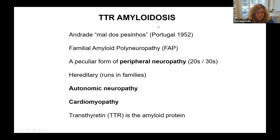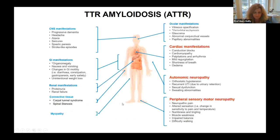In TTR amyloidosis, a neuropathy and a cardiomyopathy are the commonest features — amyloid being deposited in the nervous system and in the heart. Although there are many other parts of the body that can be affected by TTR amyloidosis, the nerves and the heart are the main parts that are involved.